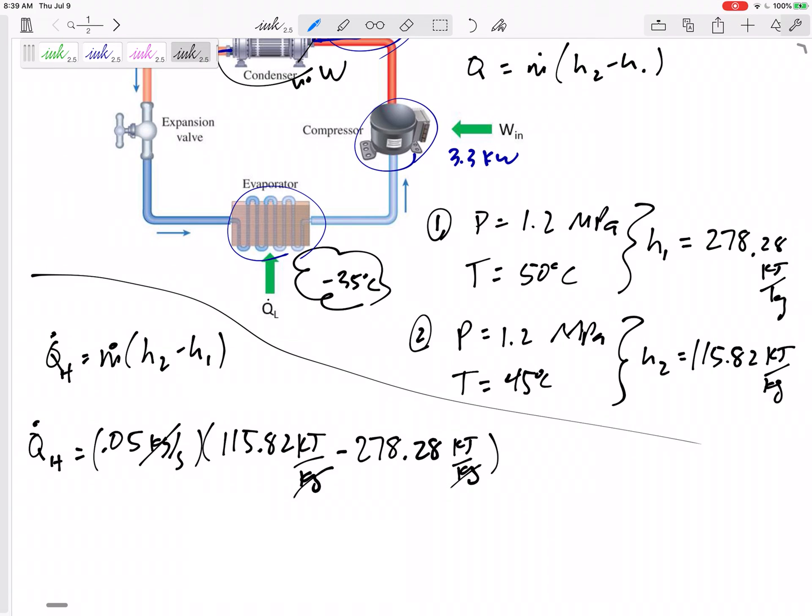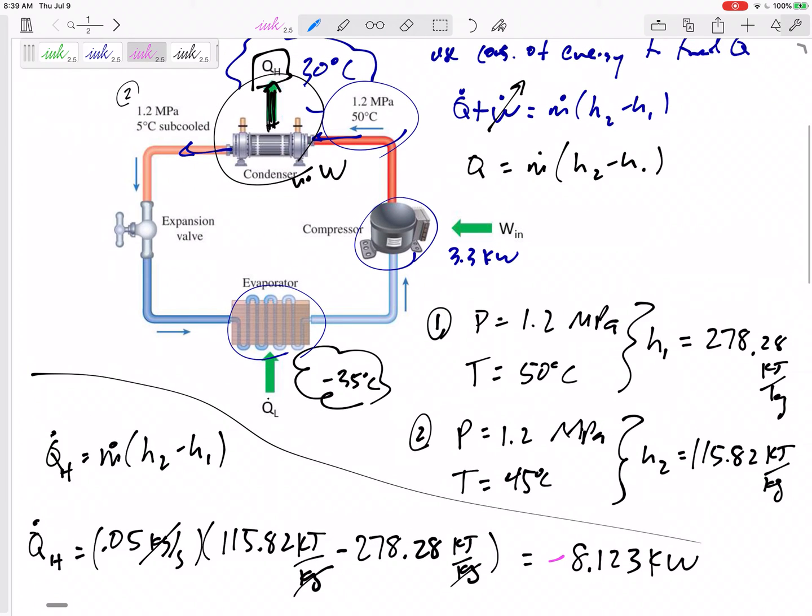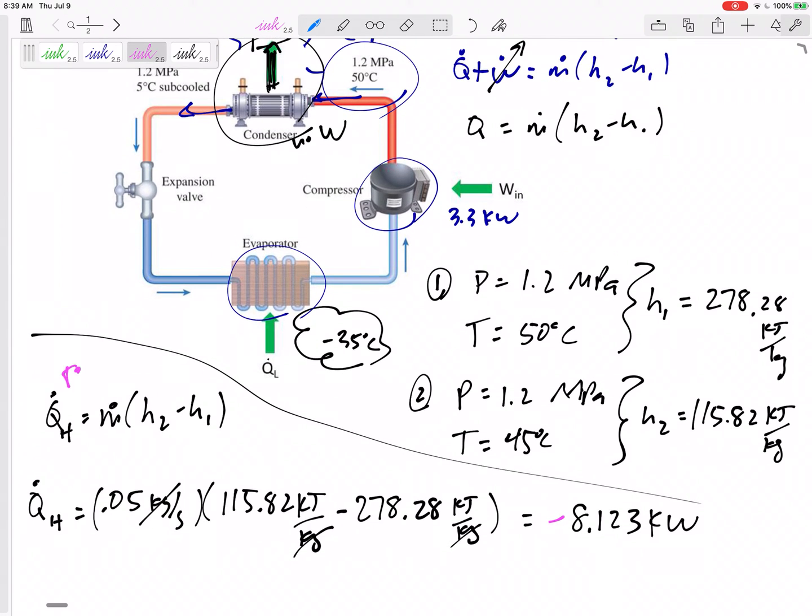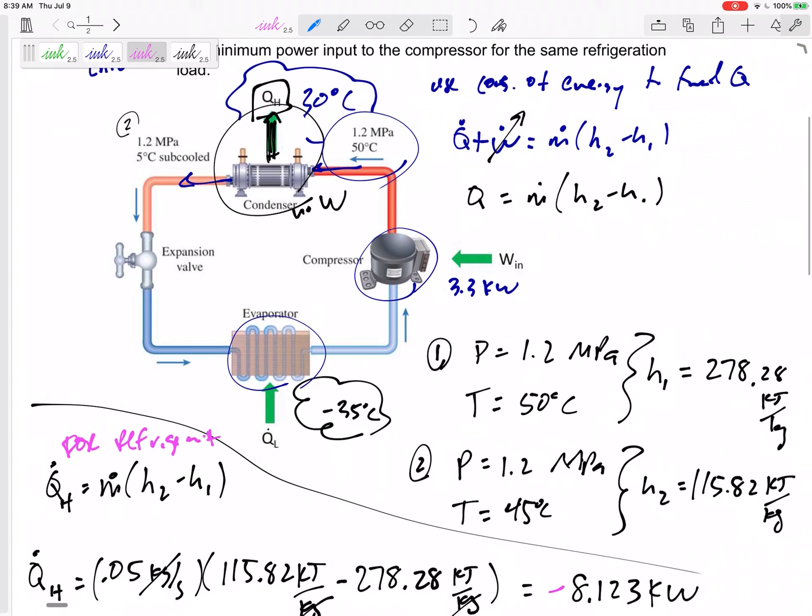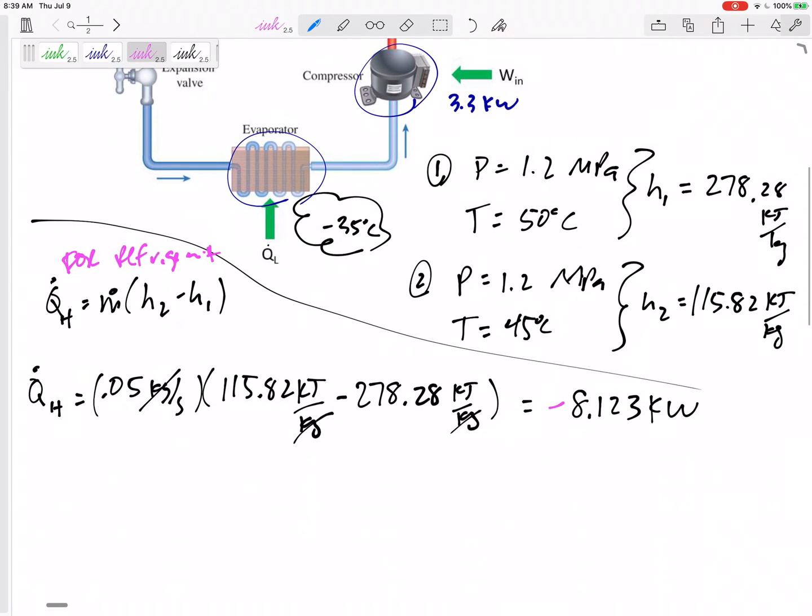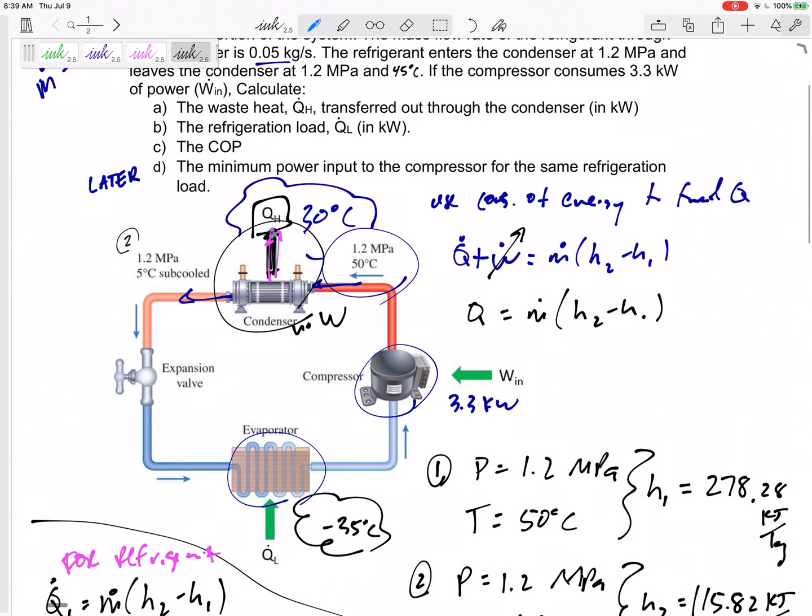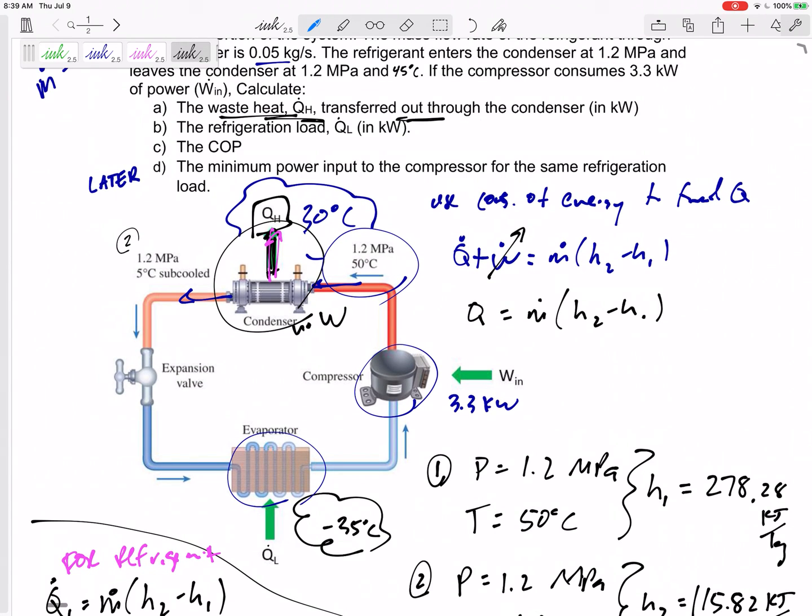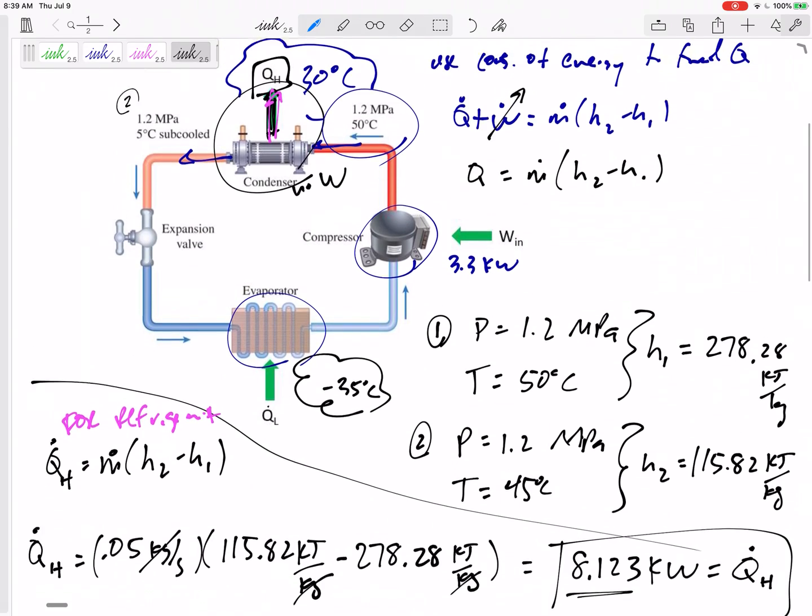H2 was 115.82 kilojoules per kilogram minus the initial 278.28 kilojoules per kilogram. So kilograms cancel. Kilojoules per second. Kilojoules per second is a kilowatt. So this is going to be 8.123 kilowatts. Now the math told me this was negative. What does that negative mean? That negative means it's going out of the refrigerant, because this is for refrigerant. That's the H of the refrigerant. The Q of the refrigerant is negative. Yeah, it's going out of the refrigerant.